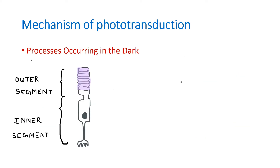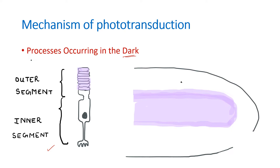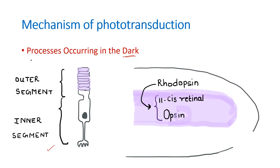After the introduction, you can start writing the processes involved. First, write what is occurring in the dark — what happens to these receptors in the dark. Consider a rod cell with an outer segment and an inner segment. The outer segment of the rod contains rhodopsin, which is the visual pigment present in rods. Rhodopsin is a combination of 11-cis retinal and opsin. These rods also contain a channel called the cGMP-gated sodium channel.